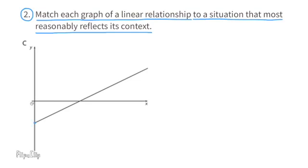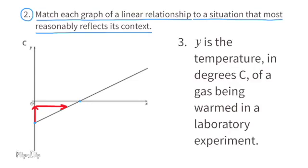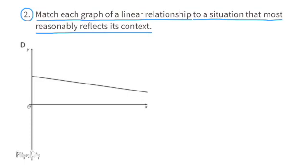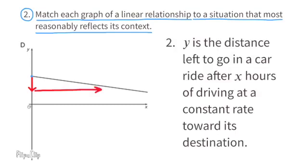Graph C has a negative y-intercept and a positive slope. I'll match graph C with situation three: y is the temperature in degrees Celsius of a gas being warmed in a laboratory experiment. Graph D has a positive y-intercept and a negative slope. I'll match graph D with situation two: y is the distance left to go in a car ride after x hours of driving at a constant rate. The negative slope represents the car's distance decreasing over time.